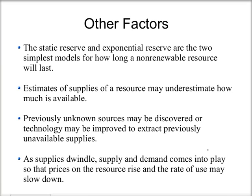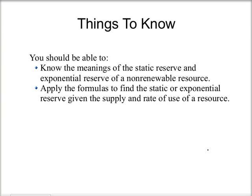There are also many other factors when looking at reserves of a non-renewable resource. Static and exponential reserve are the two simplest models, but estimates of supplies may underestimate or overestimate how much is available. Previously unknown sources might be discovered, or technology might improve to extract previously unavailable supplies. Also, as supplies dwindle, supply and demand comes into play so prices rise and the rate of use might slow down. You should know the meanings of static and exponential reserve and be able to apply the formulas given the supply and rate of use of a resource.